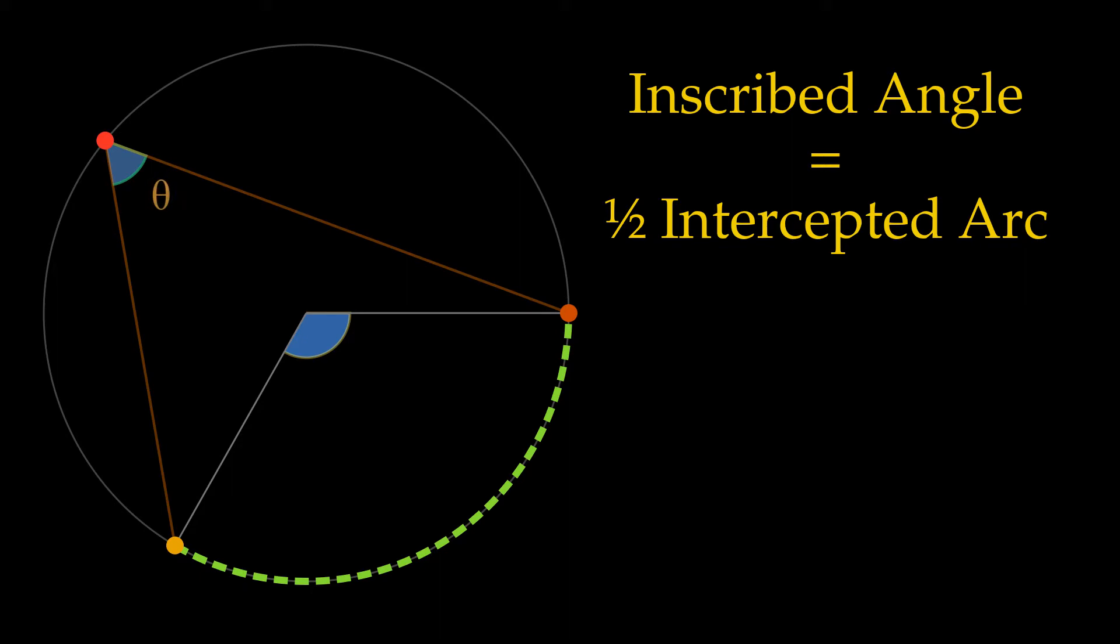Therefore, if the inscribed angle is theta, the intercepted arc is two theta.